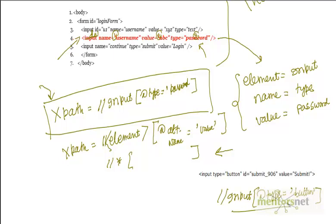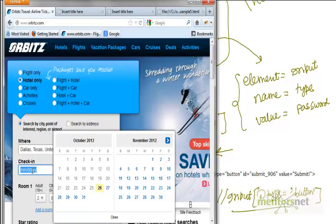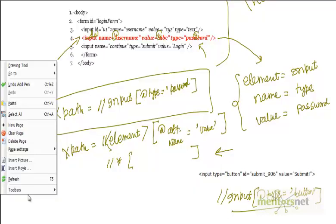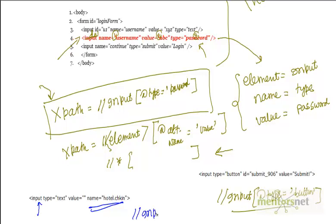Let's go to a complex application. I want to find the XPath for this element, so I inspect it with Firebug, copy the HTML into Notepad to examine it. I can see there is already a name attribute — name equals hotel-check-in — so I don't need to create an XPath for that. But if you want to write one, the XPath is double slash input, then bracket, then @type equals 'text'.